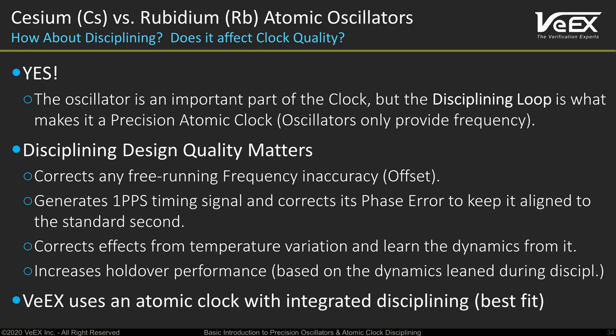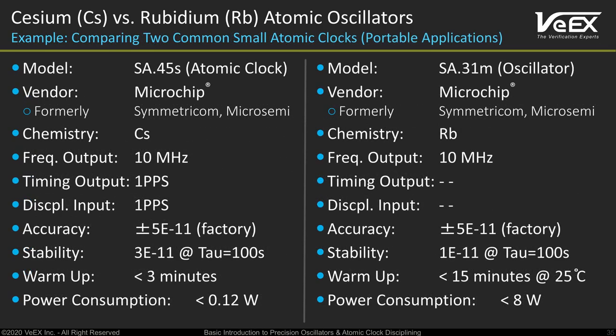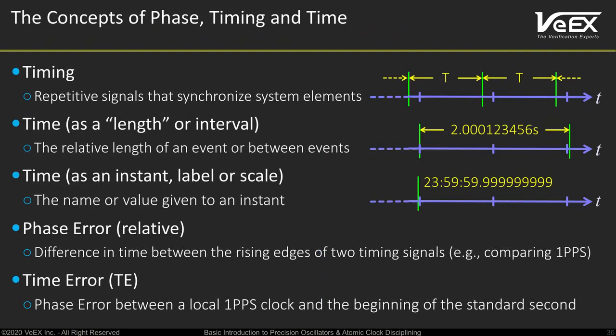In some cases the quality of the oscillator could be overshadowed by a poor disciplining loop design or lack thereof. The big advantage of an integrated or built-in disciplining loop is that it lives inside the oscillator enclosure, experiences the same environment as the oscillator, and can monitor it directly. Now we will focus on precisely aligning timing pulses so they all represent accurate time by signaling the beginning of the standard second and providing the exact duration of a second. For this, we will have to purposely vary the oscillator's frequency in order to control the phase of the output and eliminate any time error.